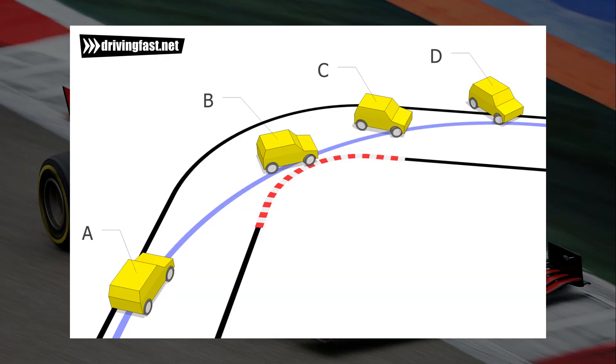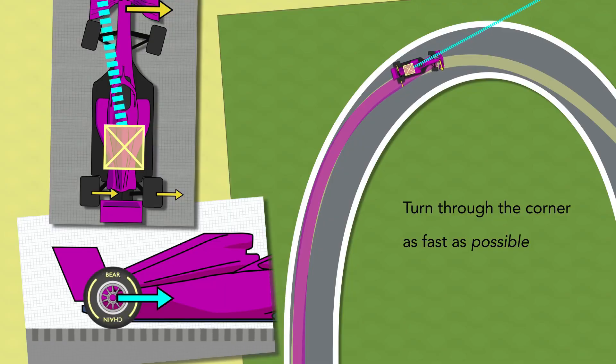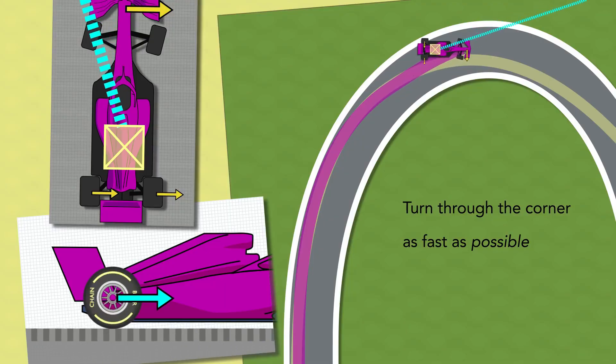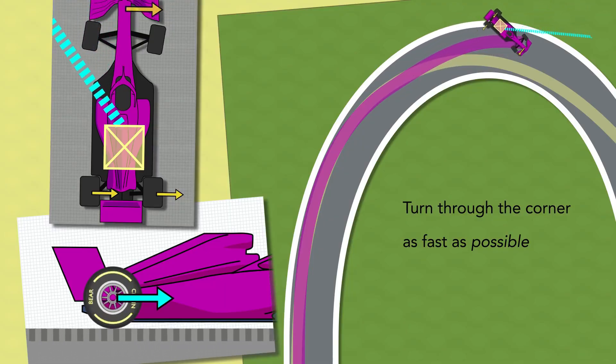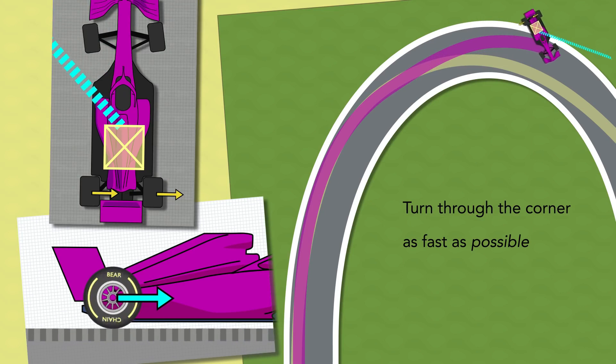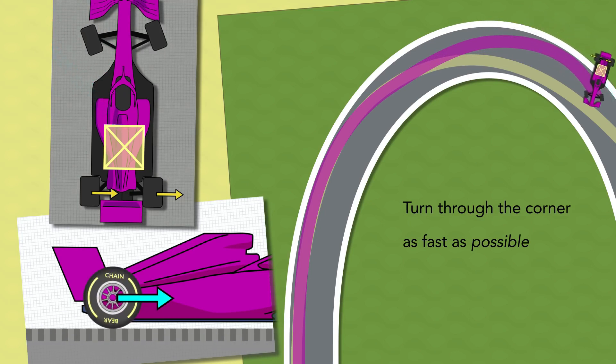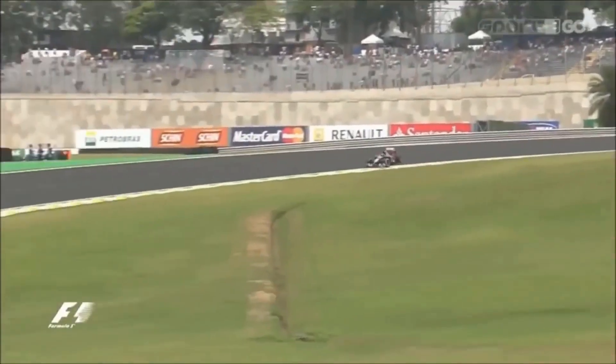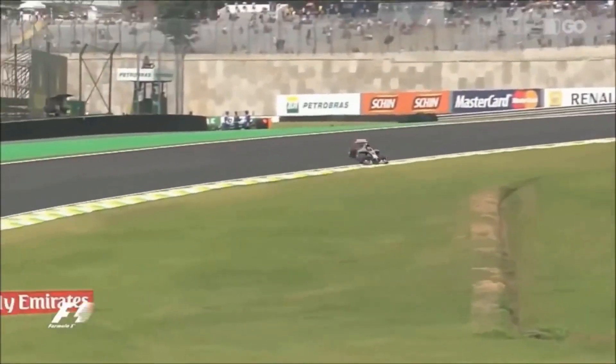Oversteer happens when the back tires have a larger slip angle than the front tires. You might have heard commentators say, "Wow, he experienced a big snap of oversteer." What this means is that the car went into a slide, most likely because the driver entered the corner with a little too much speed. When an F1 car or any other car is drifting, the car is essentially oversteering.